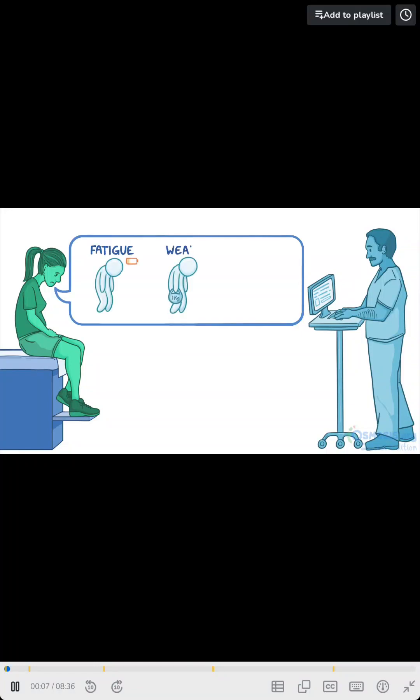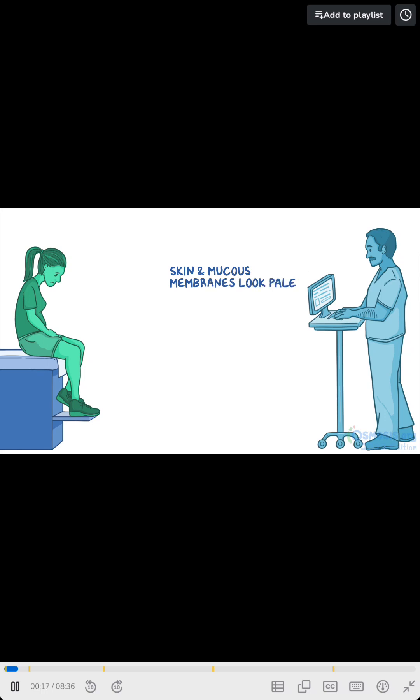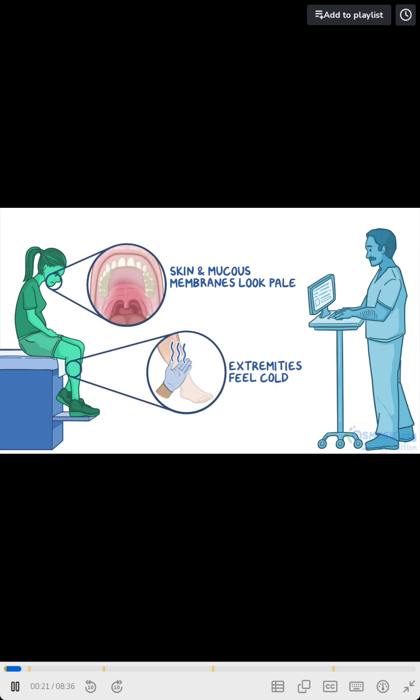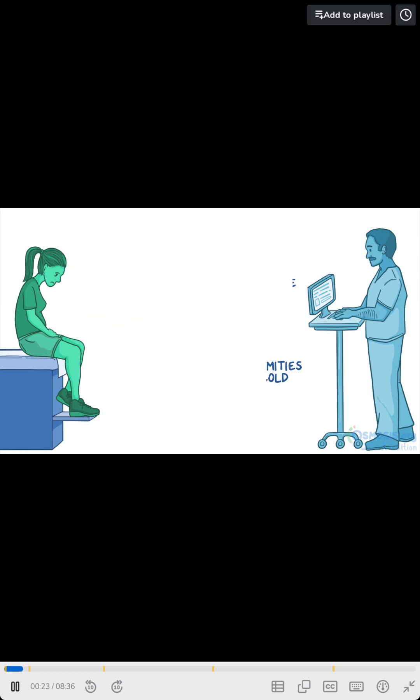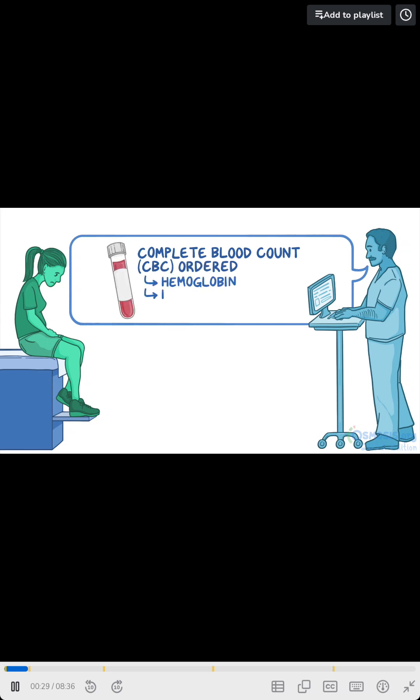A client reports feeling fatigued, weak, and is experiencing frequent palpitations. On assessment, the client's skin and mucous membranes look pale, and their extremities feel cold. Based on these findings, a complete blood count, or CBC, is ordered to check their hemoglobin and hematocrit.